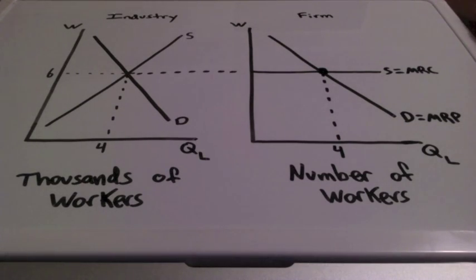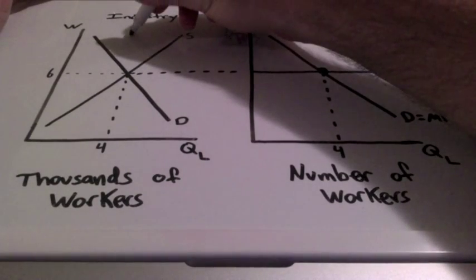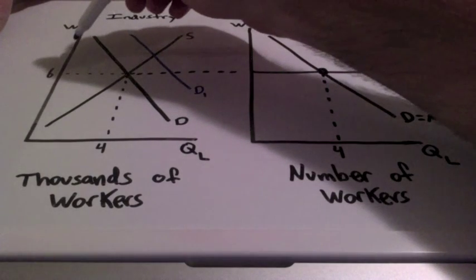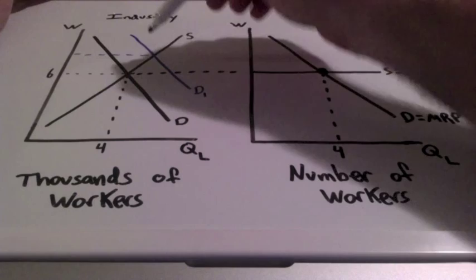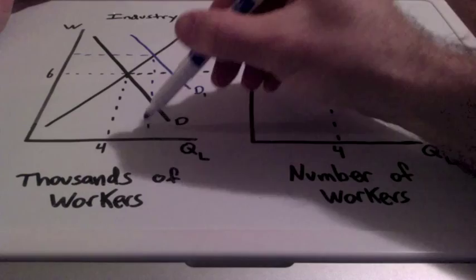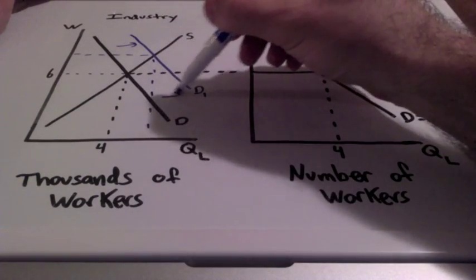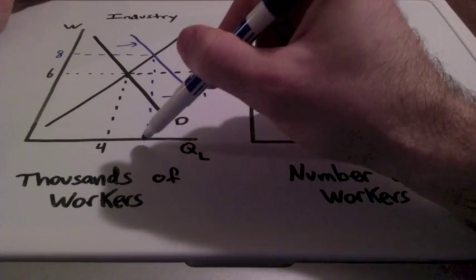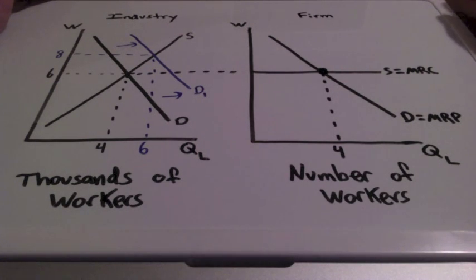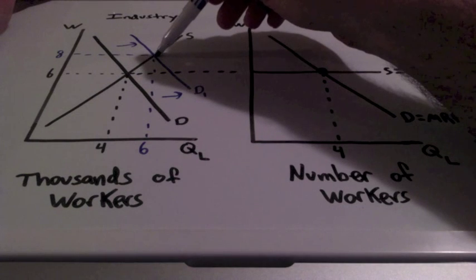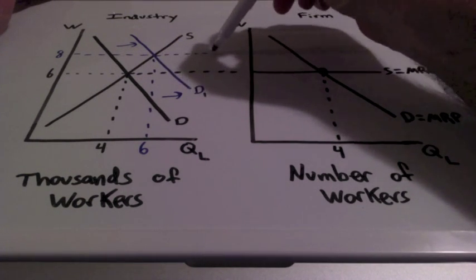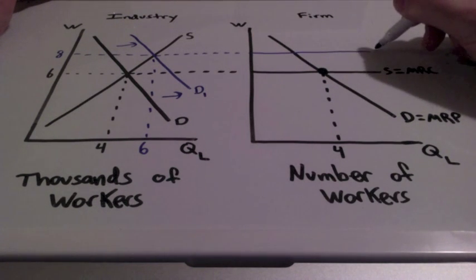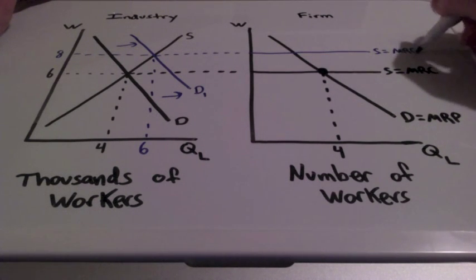Let's say that the demand for labor in this industry increases, showing a rightward shift in the demand curve. Wages and quantity supplied of labor will increase — wages go up to $8 and quantity supplied increases to 6,000 workers. The industry is once again going to relay this message to the individual firms to hire more workers.